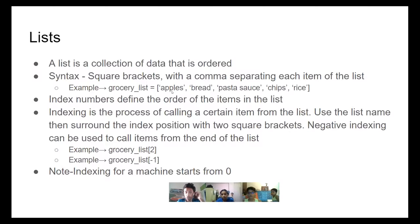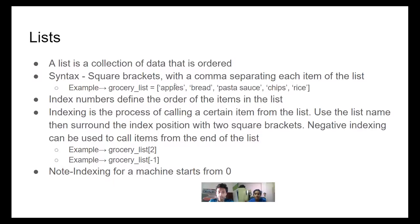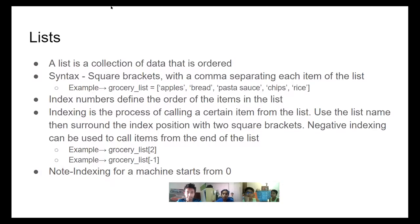So this data is actually ordered. If I were to ask you what number would bread come, you'd say two. The fact that it's ordered allows you to take certain values off of this list. Now, the way Python sees it, Python starts counting from zero. So it counts zero, one, two, three. Chips would actually be the third value for Python. We would count it as one, two, three, four, but Python uses index numbers. This value of apple's index is zero, one, two, three.